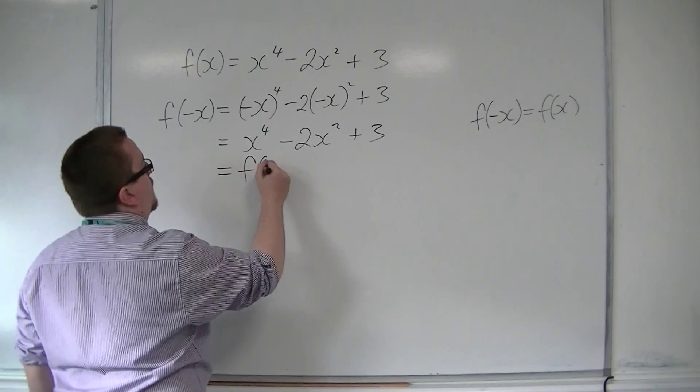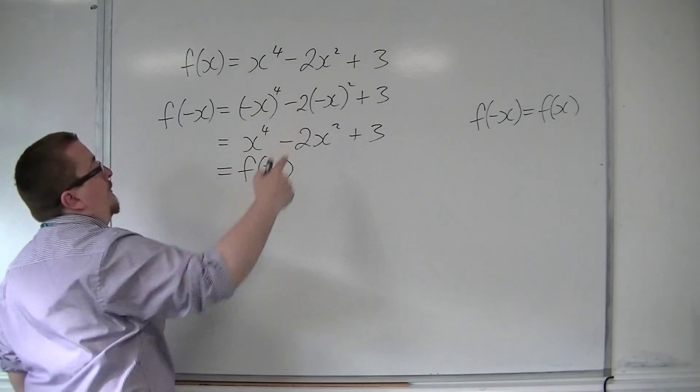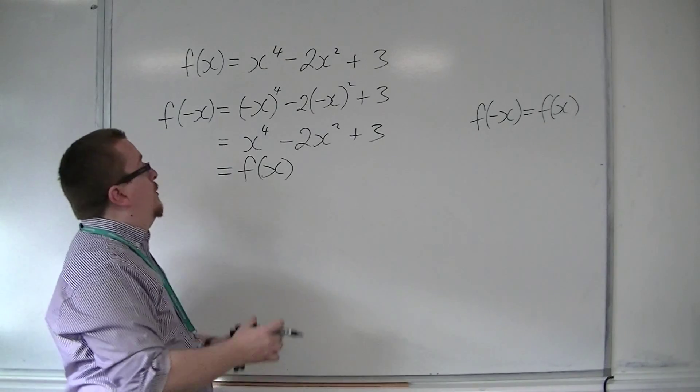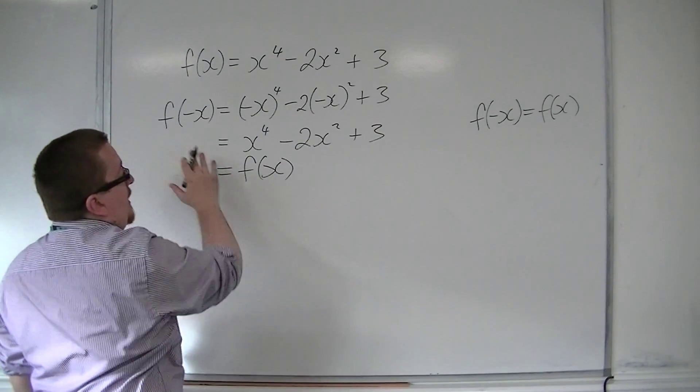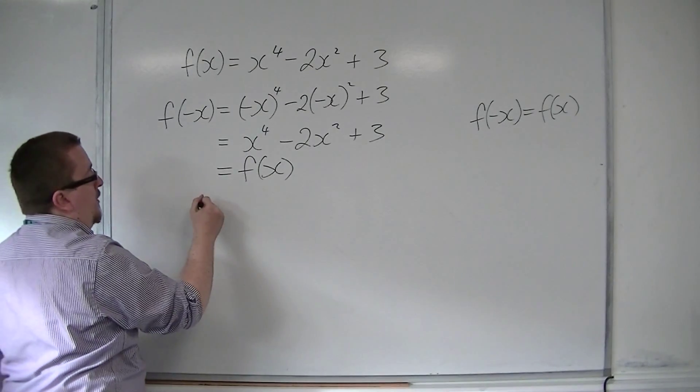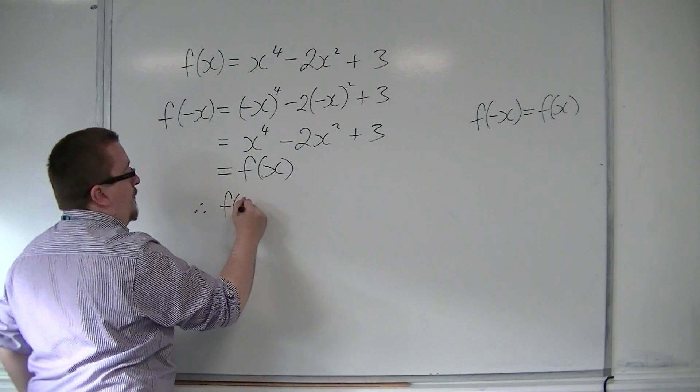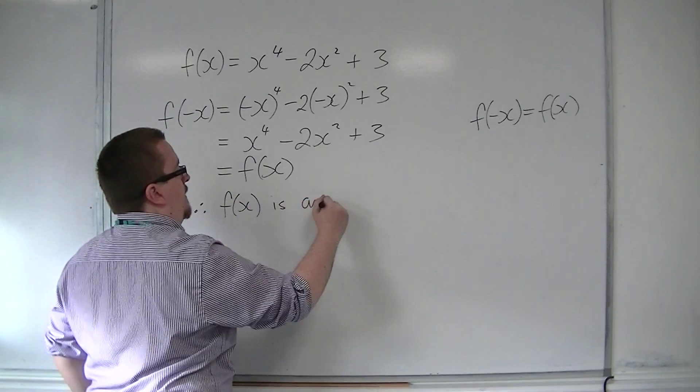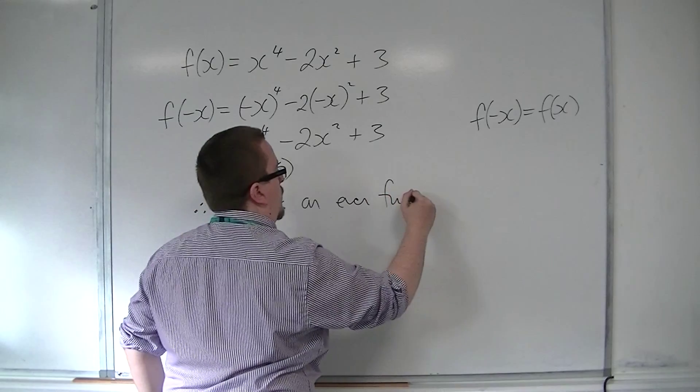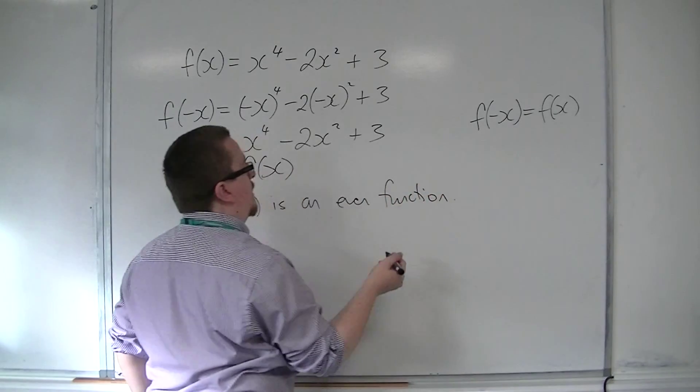And we find that we have got down to exactly what f of x is equal to. So f of minus x is the same as f of x. Therefore, f of x is an even function. So you need to make sure you have that concluding statement.